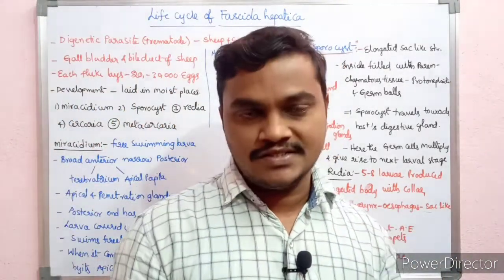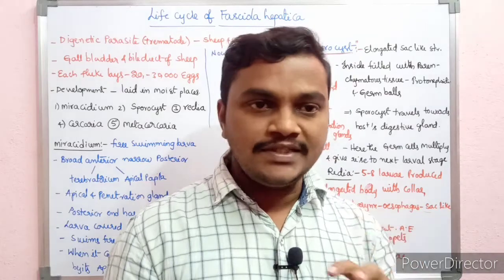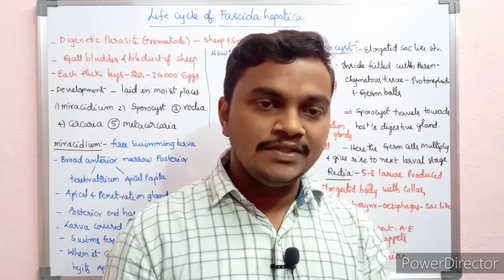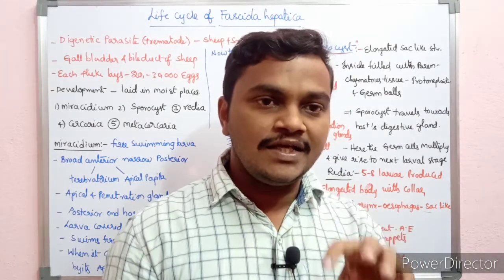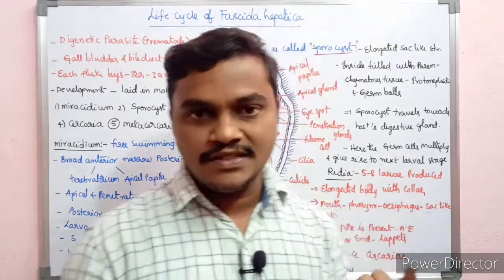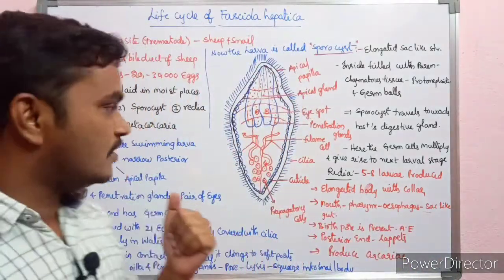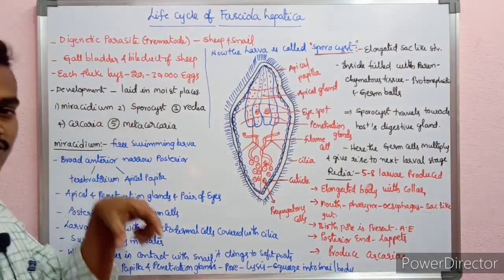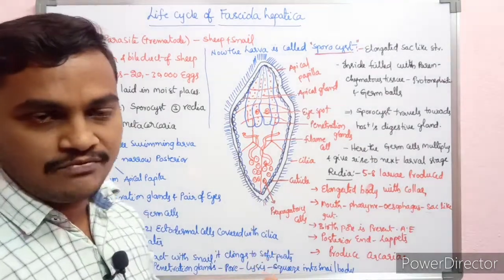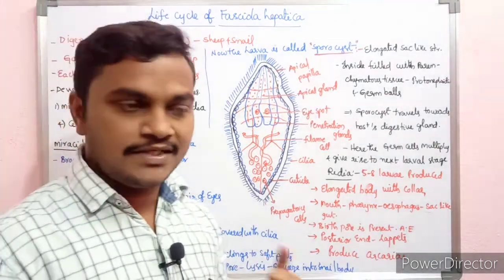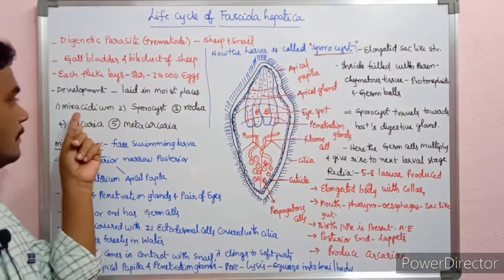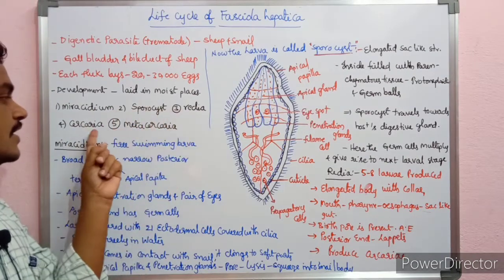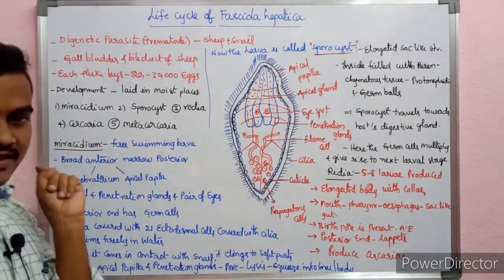Then only they develop larval stages. In the developmental stages there are many larval stages. The first stage is the Miracidium, then Sporocyst, Redia, Cercaria, and Metacercaria.